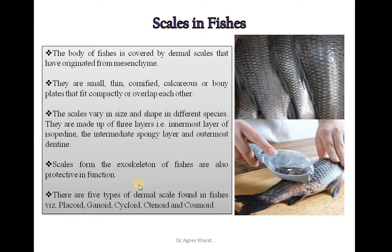There are five types of dermal scales found in fishes. These are Placoid, Ctenoid, Cycloid, Ganoid, and Cosmoid. Now, one by one, let us learn the types of scales in fishes.